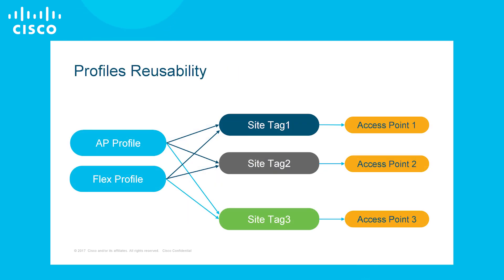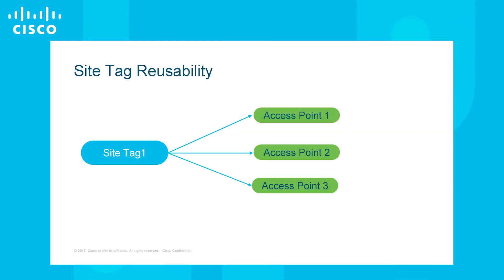AP profiles and flex profiles consist of common configuration parameters which can be clubbed and reused. Once we create the AP and flex profile, we can map this to different site tags and onto the access points instead of creating it every single time.